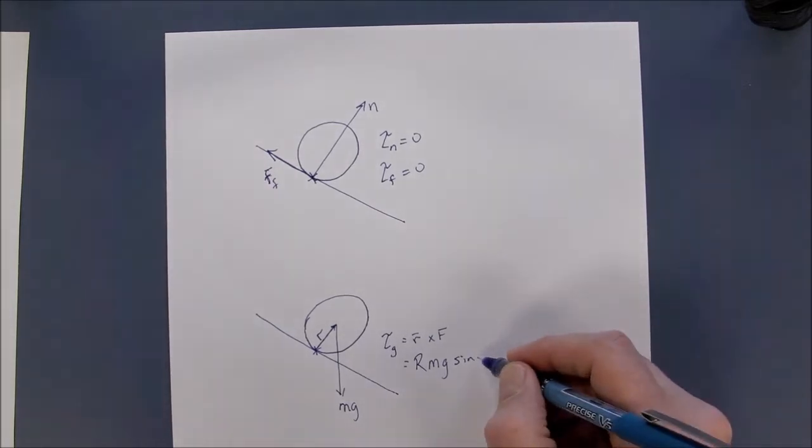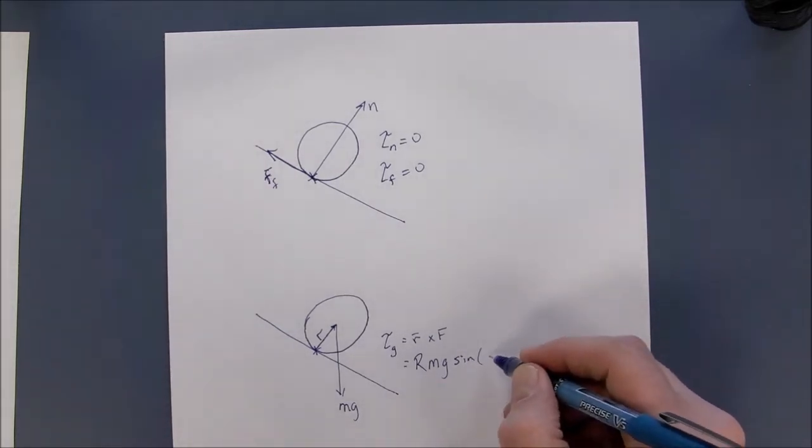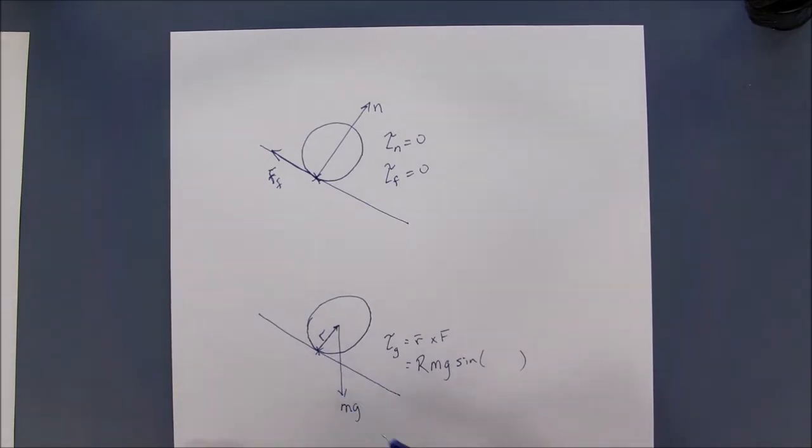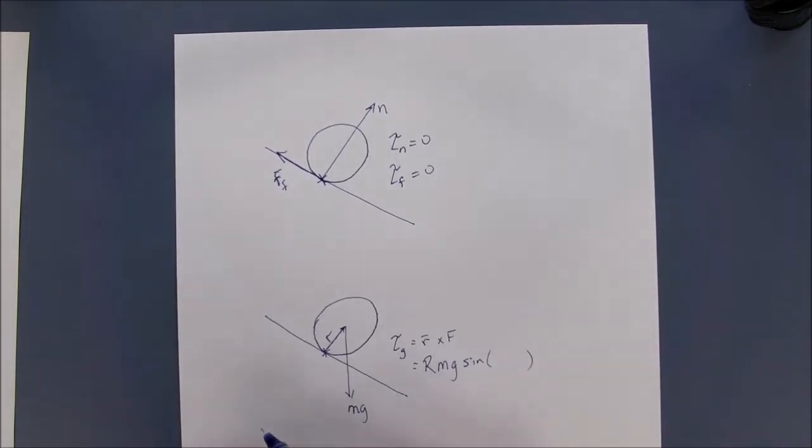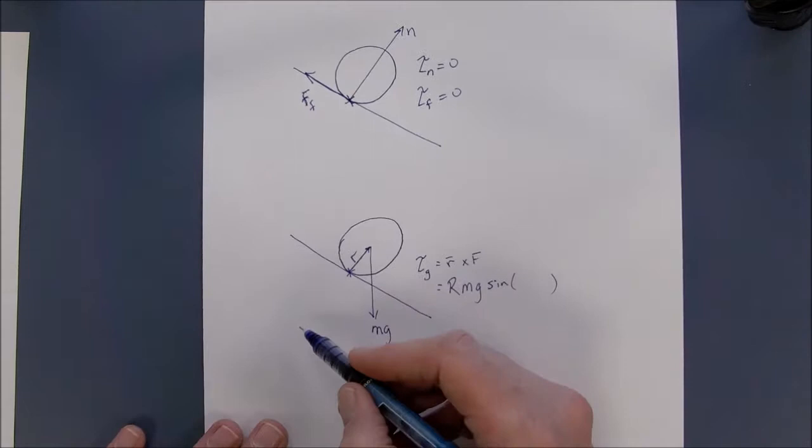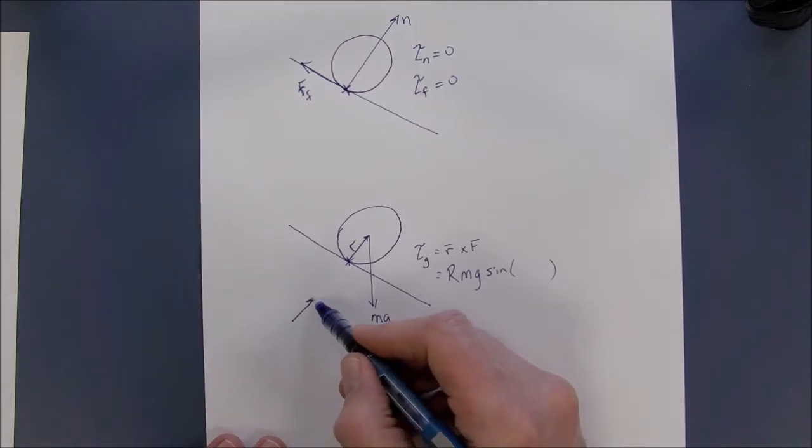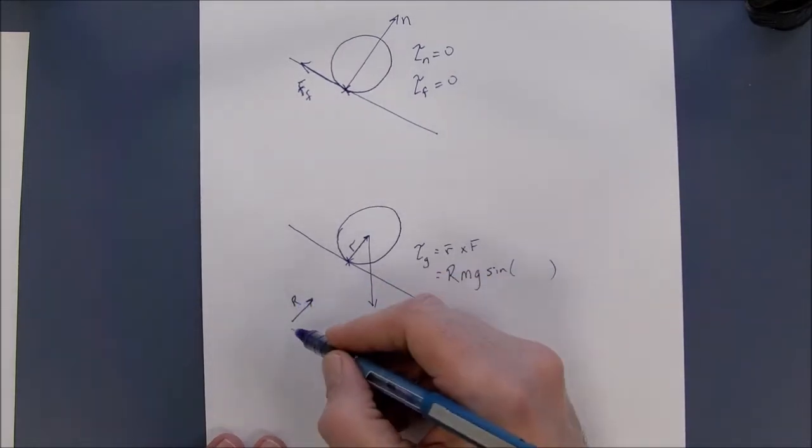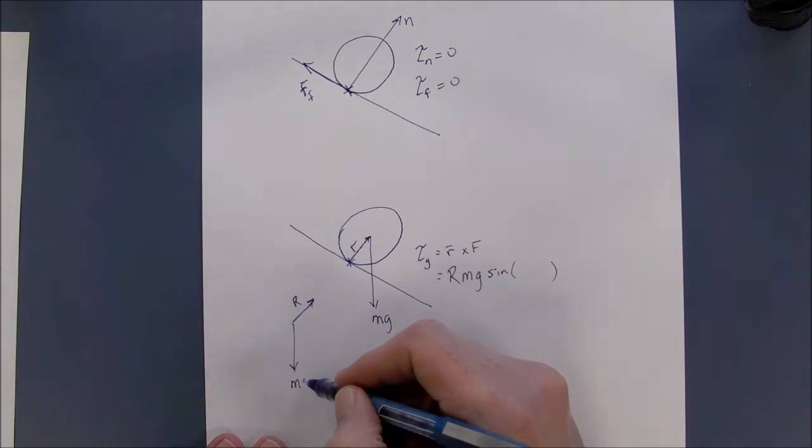F is the mass times gravity. And then we have the sine of some angle, the angle that's between the moment arm and our force of gravity. So if we redraw that, there's your R, there's your mg.